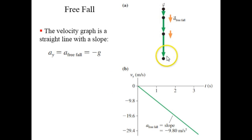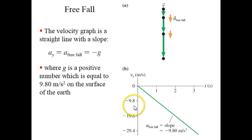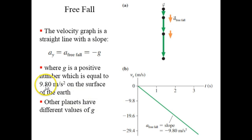Here's a motion diagram of something in free fall with only gravity acting on it, neglecting air resistance. If you make a plot of velocity versus time, the velocity is decreasing. If it's dropped from rest, it starts at zero, and then one second later it's traveling downward at 9.8 meters per second; two seconds later, at 19.6 meters per second. So the y-component of the acceleration is negative g, where g is a positive number — near the surface of the earth, 9.8 meters per second squared.